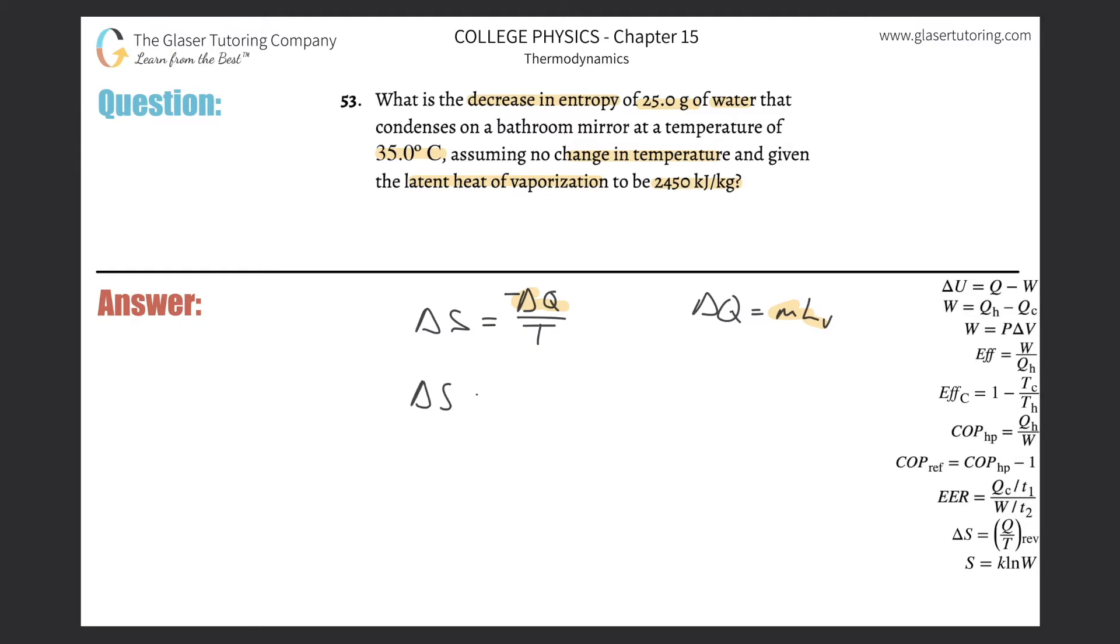The change in entropy now is equal to the mass that condensed multiplied by the latent heat of vaporization of water divided by the absolute temperature. Sounds like we have everything we need, just got to make sure we have the right units. Entropy is generally given in joules per Kelvin.